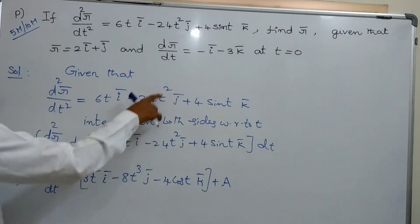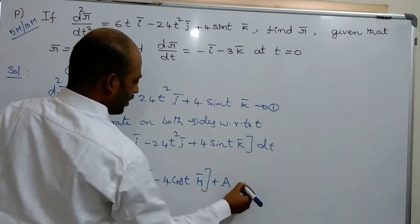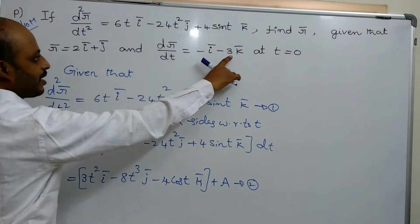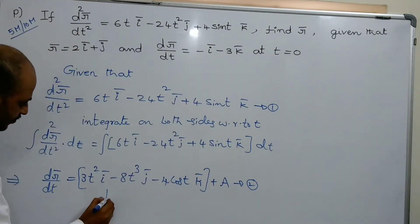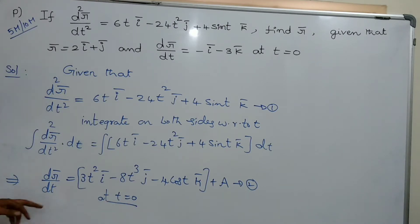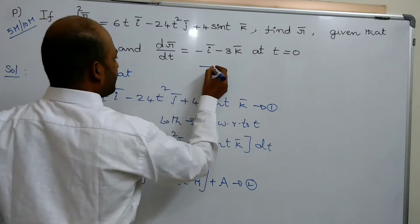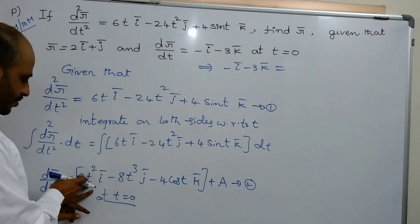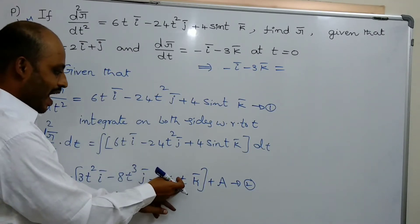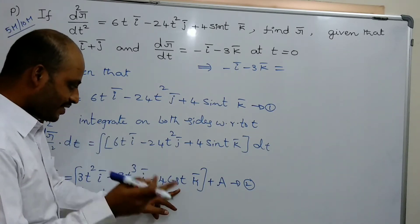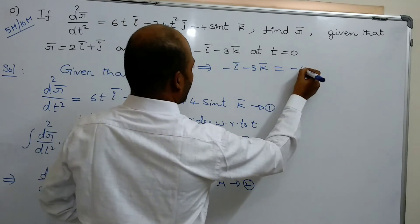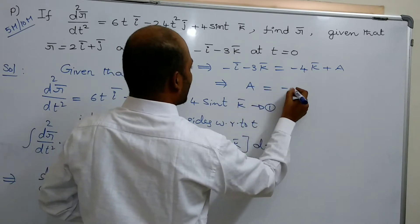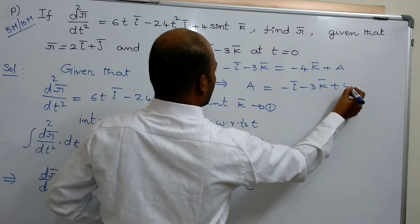By data, dr̄/dt equals minus ī minus 3k̄ at t equals 0. At t equals 0, the first term becomes 0, the second term becomes 0, cos(0) equals 1, so you get minus 4k̄ plus A. Therefore A equals minus ī minus 3k̄ plus 4k̄.